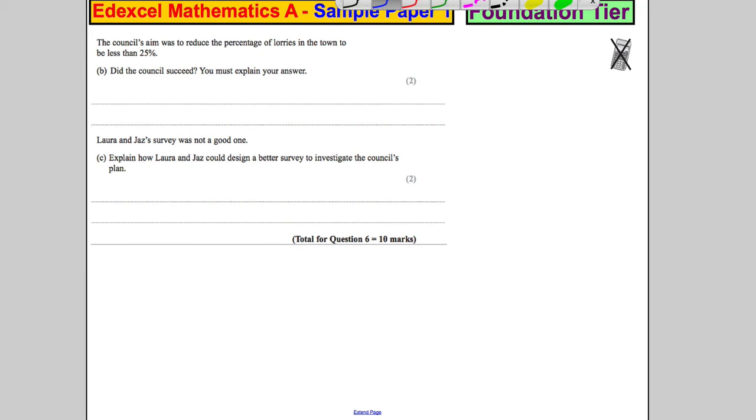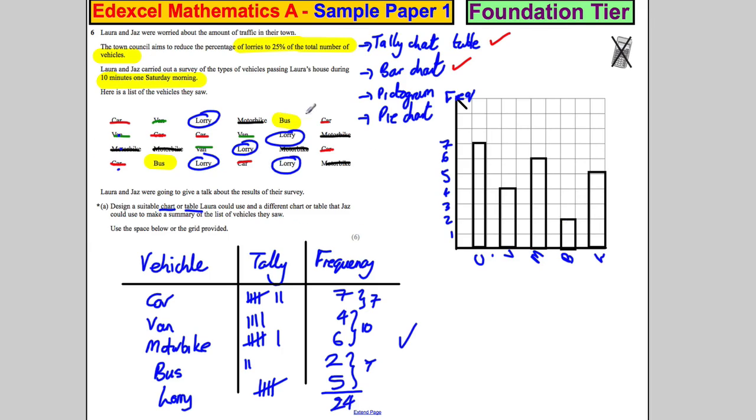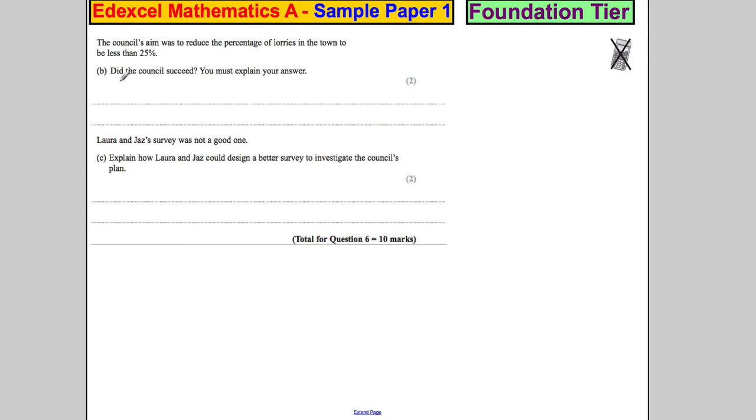Okay next, the council's aim was to reduce the percentage of lorries by 25%. Did they succeed? Well, out of this, she's got five lorries out of 24. So she's got five out of 24. Now what would 25% of 24 be? What's a quarter of 24? Well six out of 24 is 25%. So this is less.